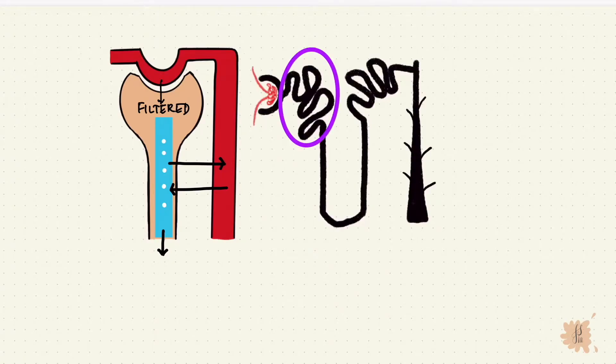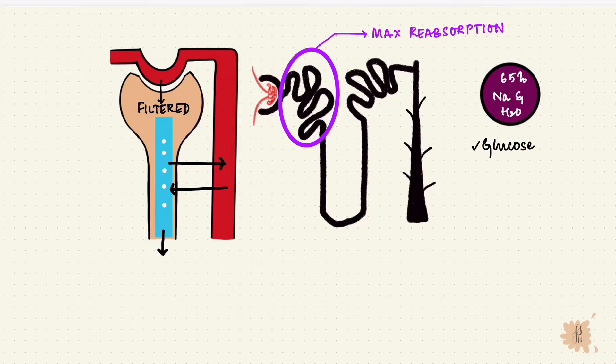The maximum reabsorption happens at the proximal tubule. 65% of the filtered load of sodium and water are reabsorbed along with other solutes like glucose, phosphate, amino acids, and bicarbonate.